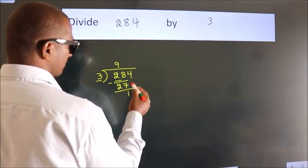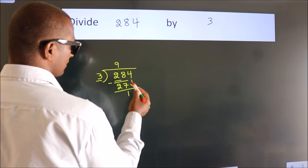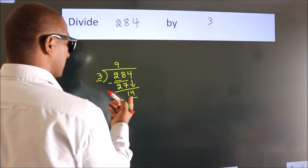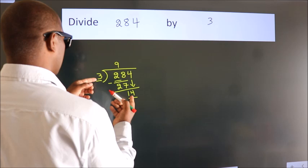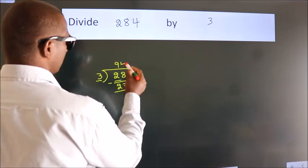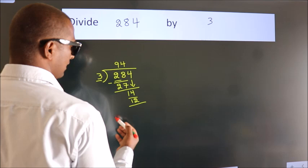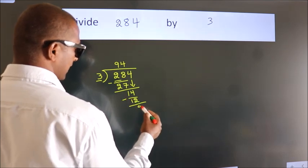After this, bring down the beside number, so 4 down, making 14. A number close to 14 in the 3 table is 3 times 4, which is 12. Now we subtract and get 2.